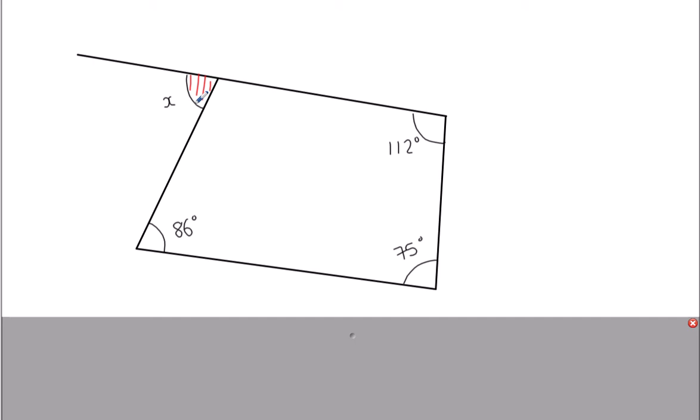Number two — pause the video and see if you can work this one out yourself. We're trying to find angle X. It's a quadrilateral this time, but again we've got a straight line sticking out. To work out angle X, I'm going to need to find the green angle inside the quadrilateral first. Once I know the green one, I can use the 180 degree rule to find the red one. To work out the green angle, I'm going to use the fact that angles in a quadrilateral add up to 360 degrees, and I've got three angles so I can work out the fourth one.